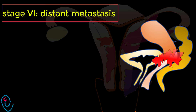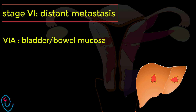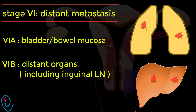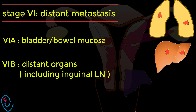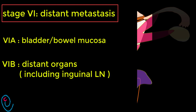Stage 4 involves distant metastases. 4A includes invasion of the bladder and/or bowel mucosa, while 4B includes distant organ metastases. Stage 4B also involves metastases to the inguinal lymph nodes.